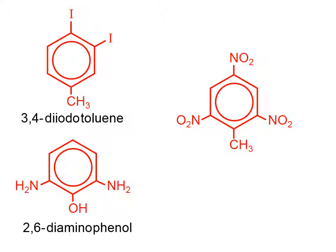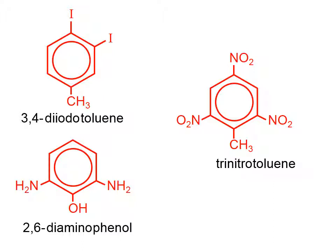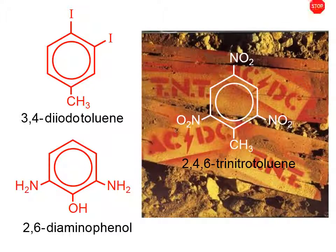This last one is a toluene molecule, indicated by the CH3 group, and then we have an NO2 group, another NO2 group, and another NO2 group — so this is going to be trinitro. We need to specify the locations of those nitro groups. If the carbon at the bottom of the ring is carbon number one, then the nitro groups will be at positions 2, 4, and 6: 2,4,6-trinitrotoluene. And that is the technical name for TNT.